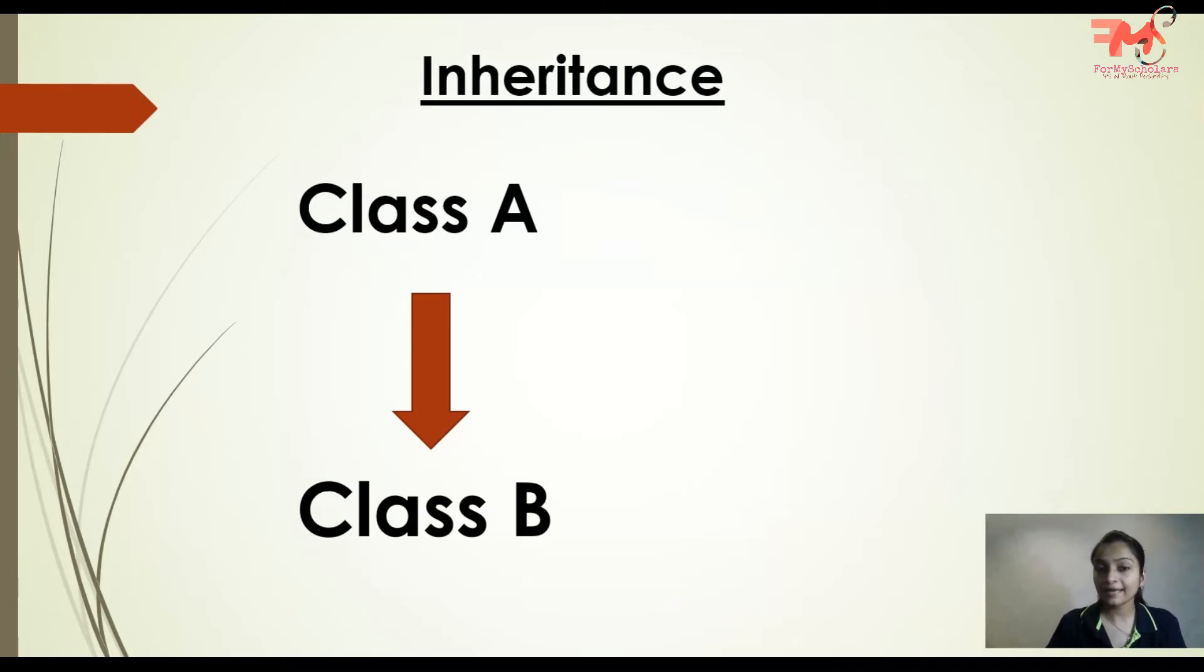If it chooses the second option, that is called inheritance. This means if a class is using the functions or the variables of another class, then this concept is known as inheritance. The word inheritance means that you inherit something, you use someone's properties.